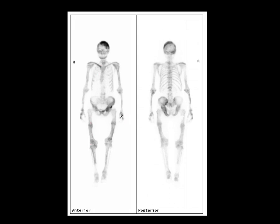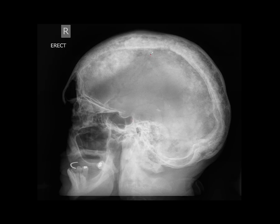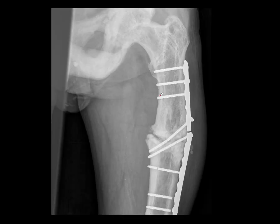Looking at plain x-rays of this patient: the skull demonstrates widening of the diploic space, classic of Paget's disease. In the femur, there is extensive cortical thickening, diffuse thickening of the cortex, and thickening of the trabeculae. The patient has sustained a pathological fracture due to chronic bowing of the femur, which has been fixed — though we can see some metalwork fracture. These are all classic appearances of Paget's disease.